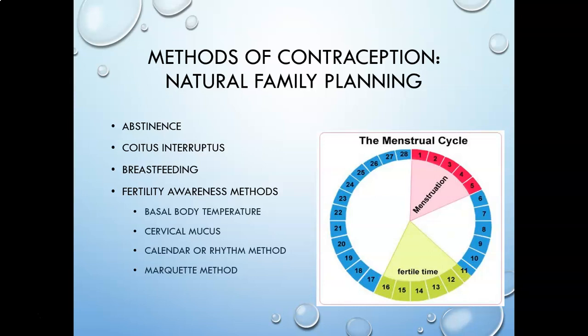Fertility awareness methods are the ones where you monitor physical characteristics to see when you are most fertile and avoid intercourse during that time. A lot of people don't like natural family planning because it is a lot of work — it's not just taking a pill or having an IUD. You have to take your temperature, check your cervical mucus, and so on.